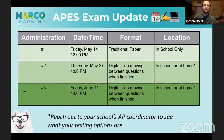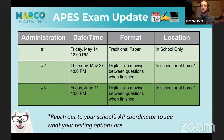Let's get into the APES exam update. This information was released by the College Board not too long ago. The first administration window is the normal exam date, May 14th at noon — a traditional paper exam, in school only. This is ultimately up to your school's AP coordinator, so you're going to have to reach out to them and see what your testing options are. For my school personally, we are selecting option two — a digital exam on Thursday, May 27th at 4 p.m.